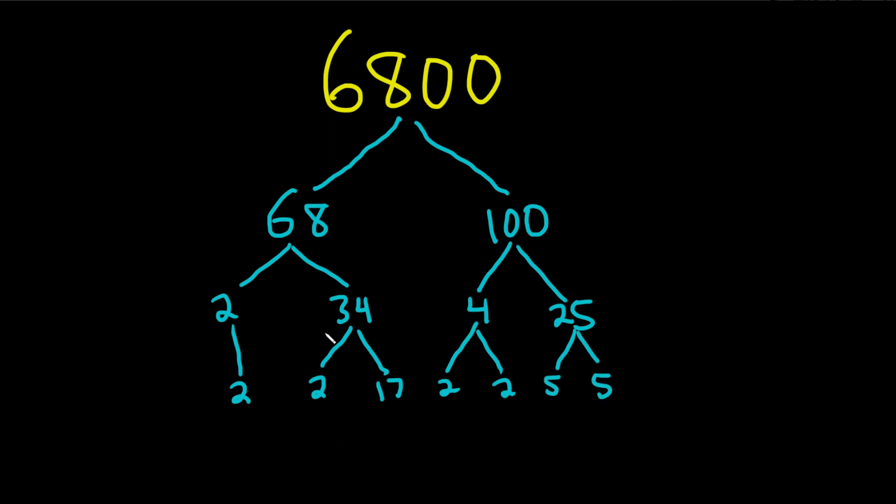And so let's start with the smallest numbers first. So 2s. So 2, 2, 2, 2. That's 2 to the 4th. 5 times 5 is 5 squared. And then we just have 17. And that should be the prime factorization of 6,800.